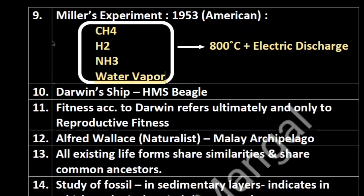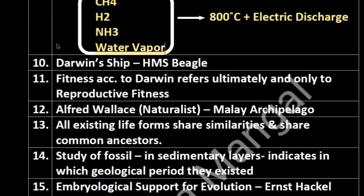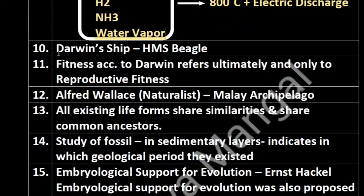This is an important point: before life, the Earth's atmosphere was reducing in nature. After that it became oxidizing in nature. Darwin's ship's name was HMS Beagle.